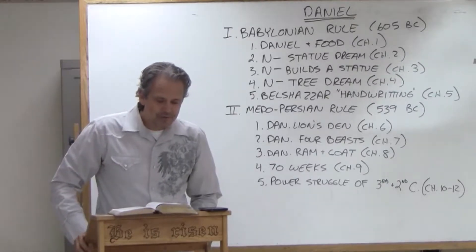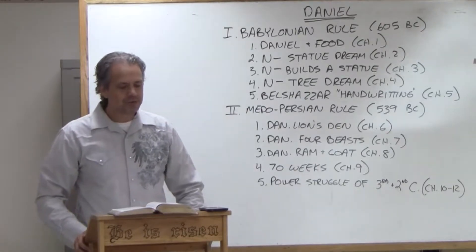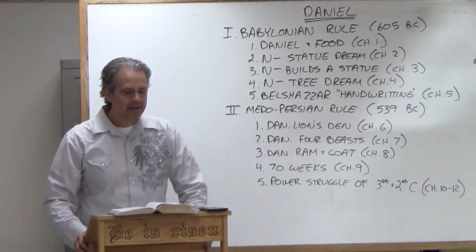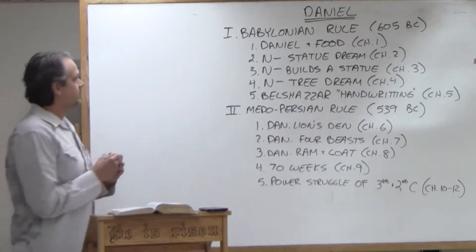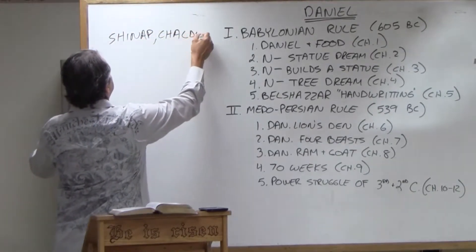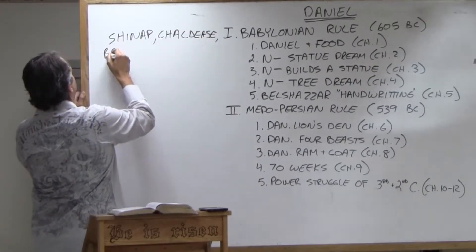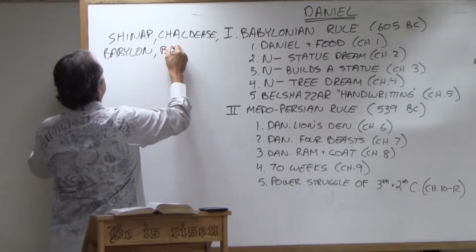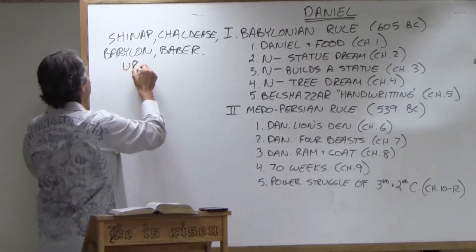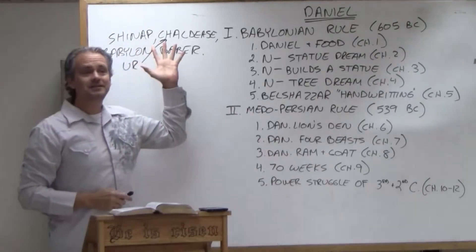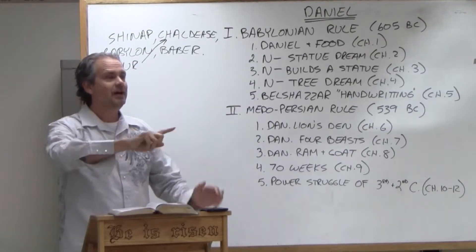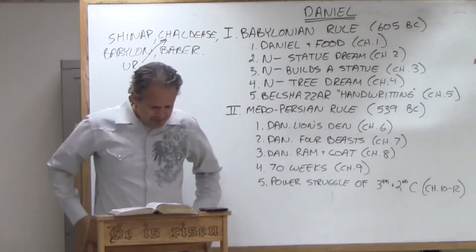Nebuchadnezzar goes back to Babylon, and Daniel is in that group, and that is where the book of Daniel starts. Chapter 1 verse 1: In the third year of the reign of Jehoiakim king of Judah, Nebuchadnezzar king of Babylon came to Jerusalem and besieged it. They took him back to Shinar. Shinar is a great word to recognize because Shinar, the Chaldees, Babylon, Babel, remember Abraham came from Ur of the Chaldees. All of these are the same place. So Jerusalem is going to be exiled right back down to where it all started with Abraham. So that brings us right into Daniel chapter 1.